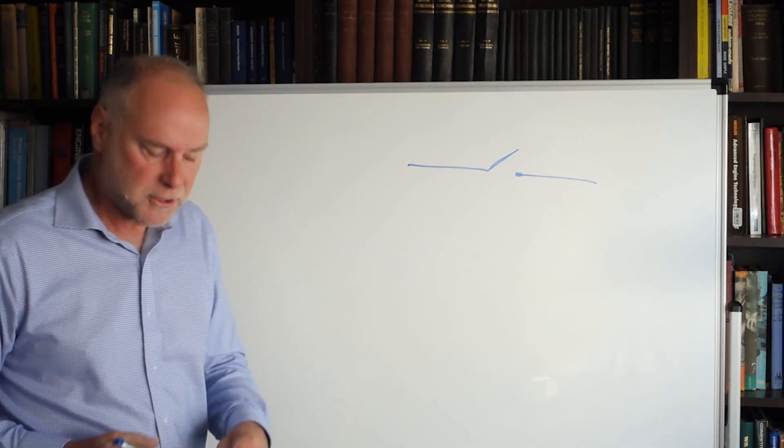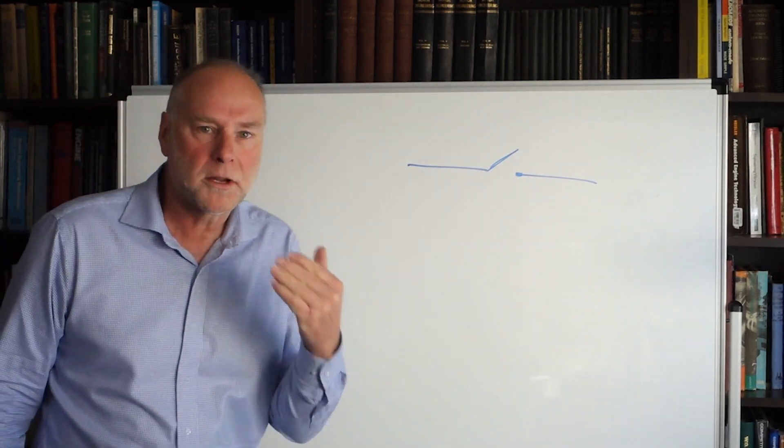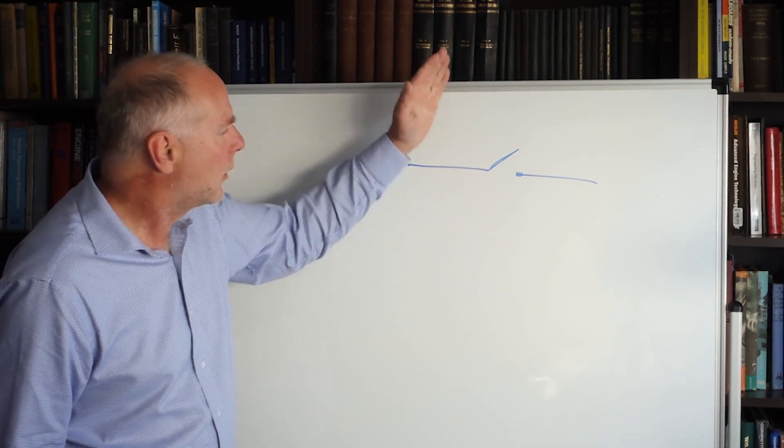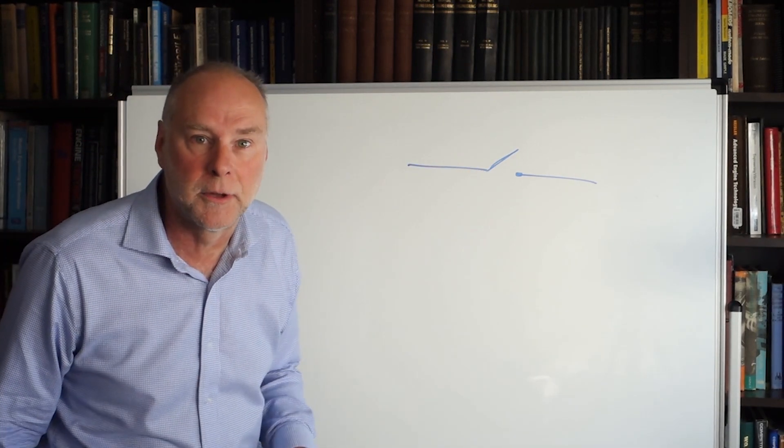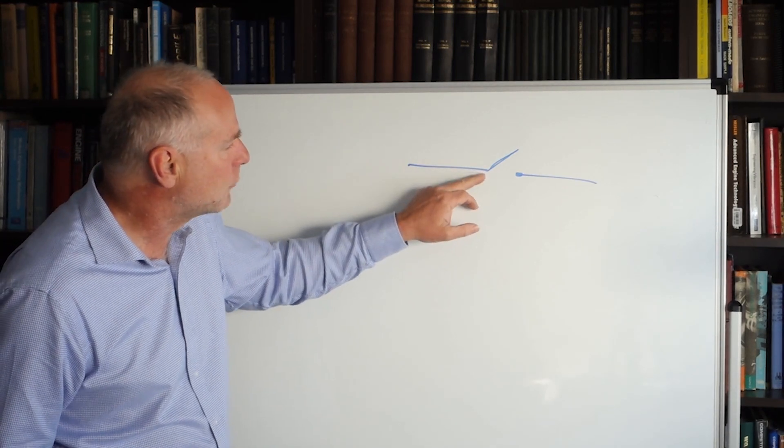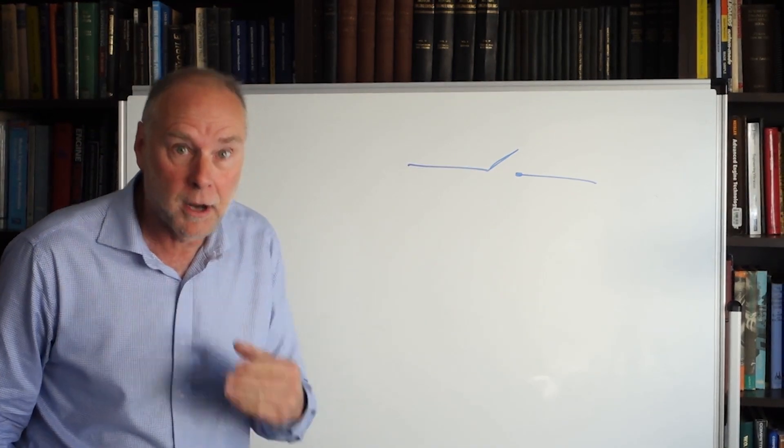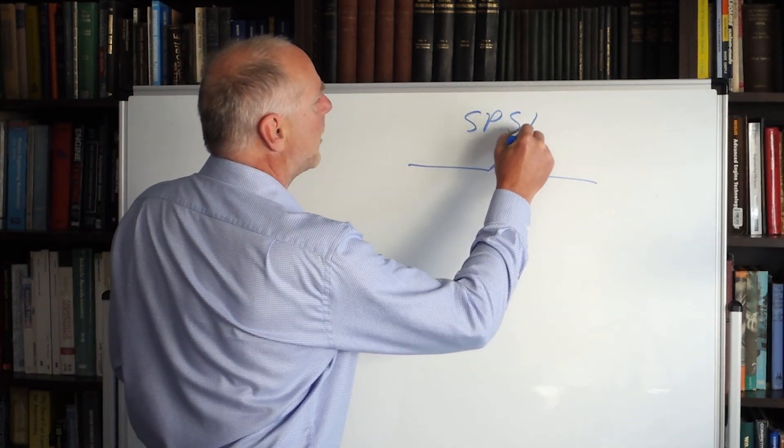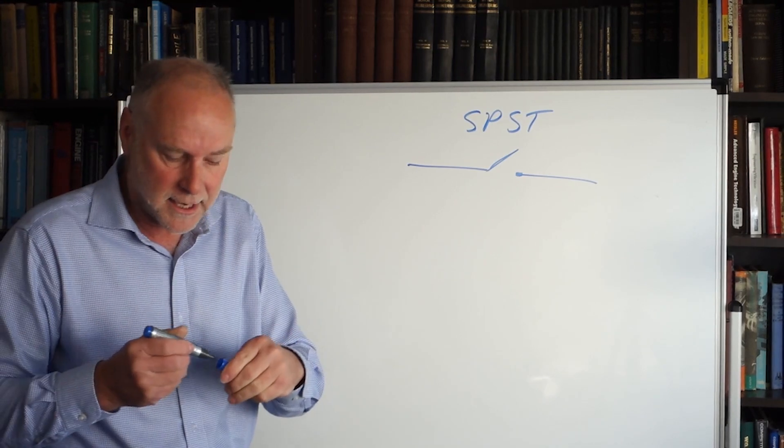Here we have a switch. It's a simple on-off switch. Now what's the pole? This terminal here is the pole. What's the throw? Well where can you switch that terminal? So this one's got a single pole and a single throw. It can only go in one direction. Sometimes called a single pole single throw switch.